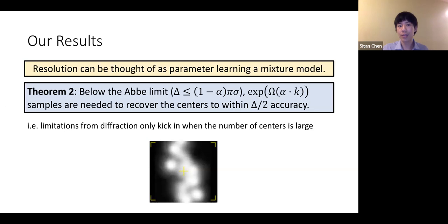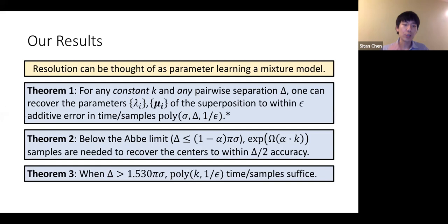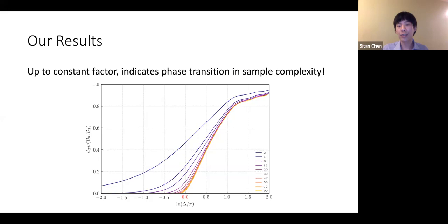Theorems 1 and 2 together say: you can go below the diffraction limit, yet there is statistical meaning assigned to, for instance, the Abbe limit — namely, if you go too far below the diffraction limit, you incur exponential sample complexity bounds. Our Theorem 3 shows that if you go a sufficiently large constant factor above the Abbe limit — specifically this factor of 1.530 — then you can achieve polynomial time and sample complexity, not just in 1/ε but in the number of Airy disks k. Theorems 2 and 3 together pinpoint, up to a constant factor, that the diffraction limit is simply a very sharp phase transition in sample complexity.